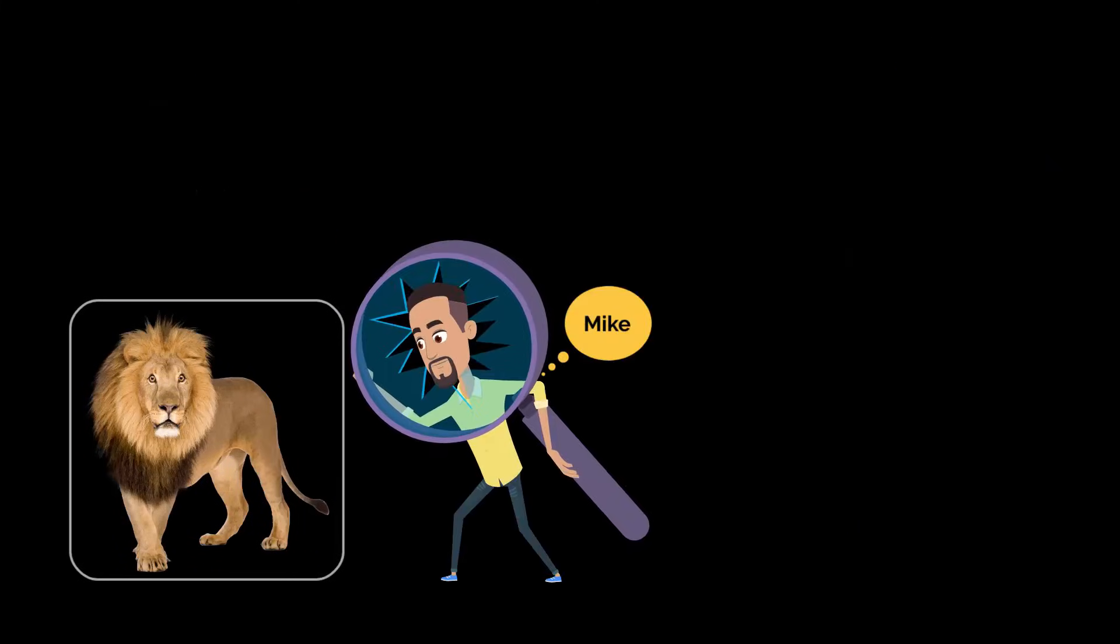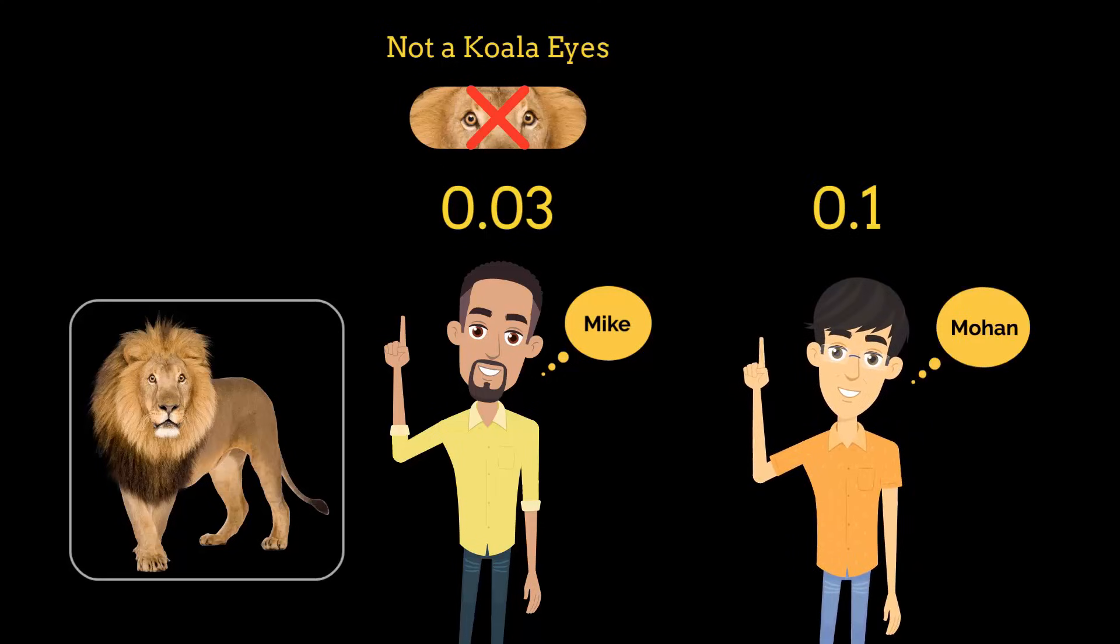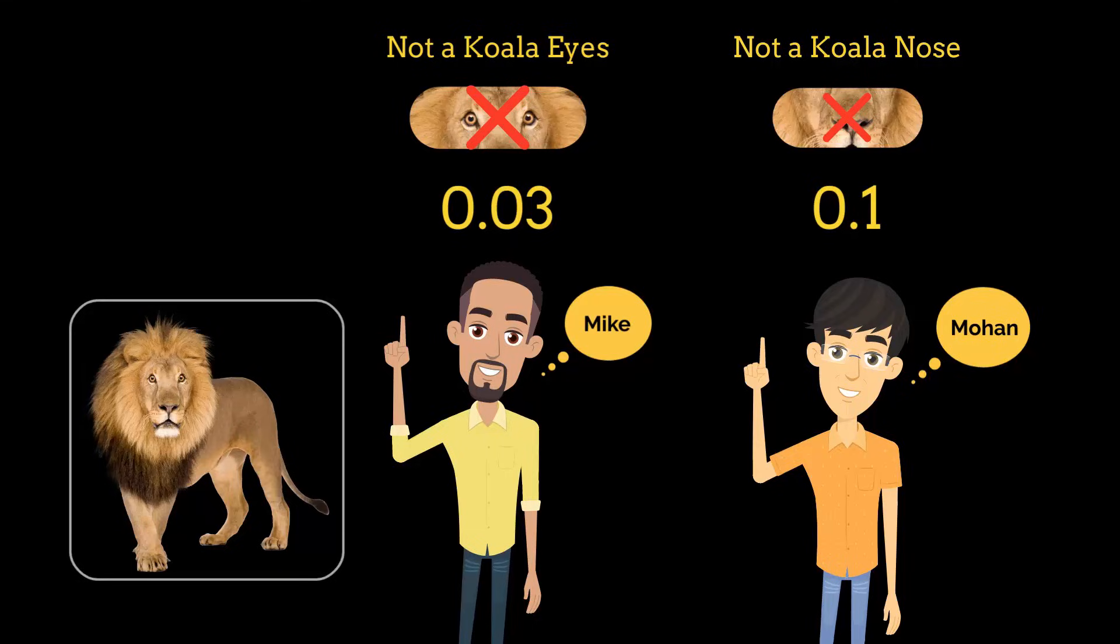When you give them an image of a lion, Mike will say the decision is 0.03 because the eyes are like round eyeballs but they don't look like koala's eyes. Similarly for nose, he can give some score, and if the score is more than 0.5, we'll say those are koala's eyes or nose.